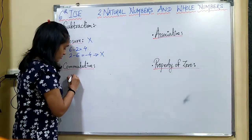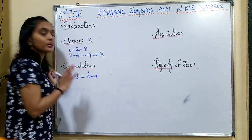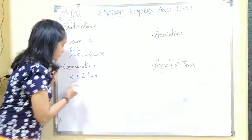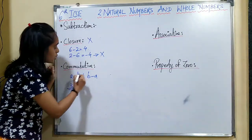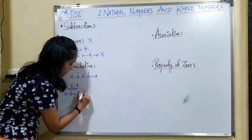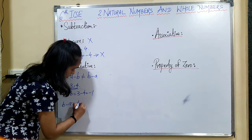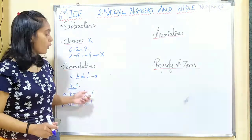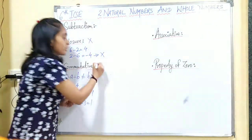Now, commutative property. It means a minus b should equal b minus a for it to be commutative under subtraction. But this is not possible. For example, with numbers 3 and 4: a minus b gives 3 minus 4 equals minus 1, and b minus a gives 4 minus 3 equals 1. The answers are not the same, so the order of subtraction does not give the same answer. Therefore, commutative property does not hold.